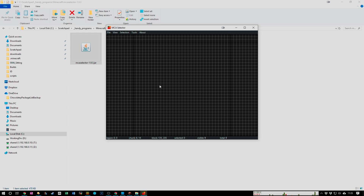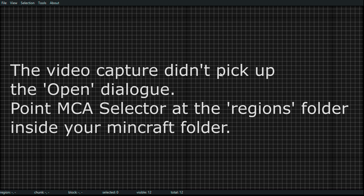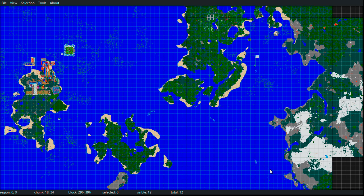Once you've downloaded MCA Selector, right-click and hit open. That will open this window. Once the MCA Selector window opens, go to File, Open, and point it to your Minecraft saves folder in 1.15.2. Go to your world and then to the region folder, and hit Select Folder. That will open our world.